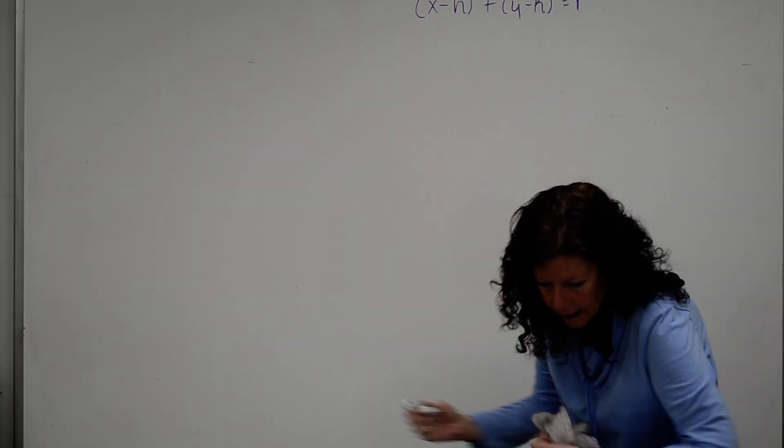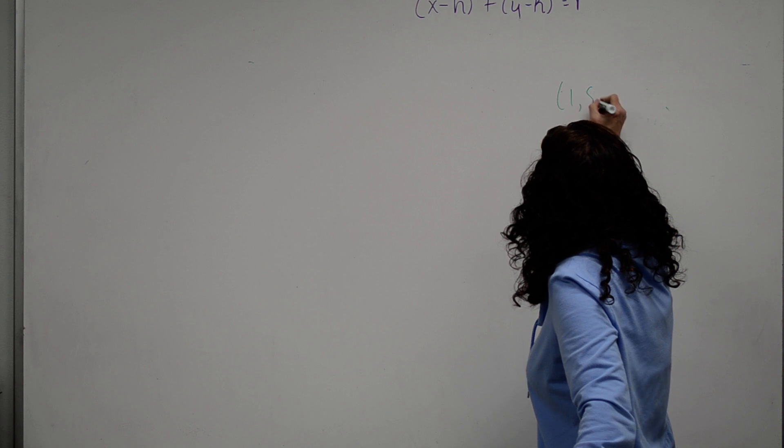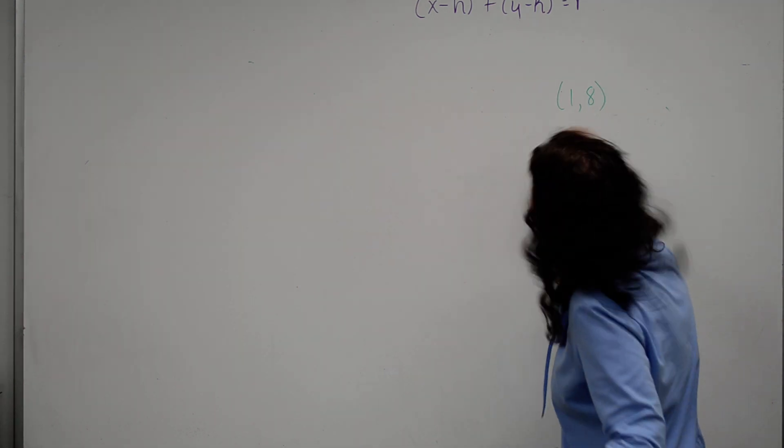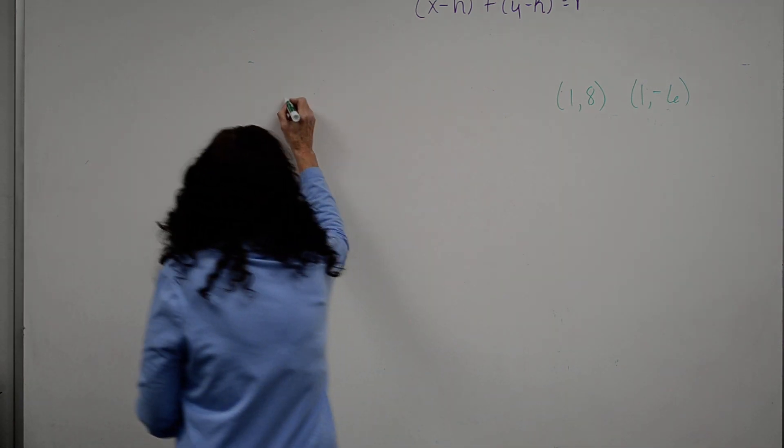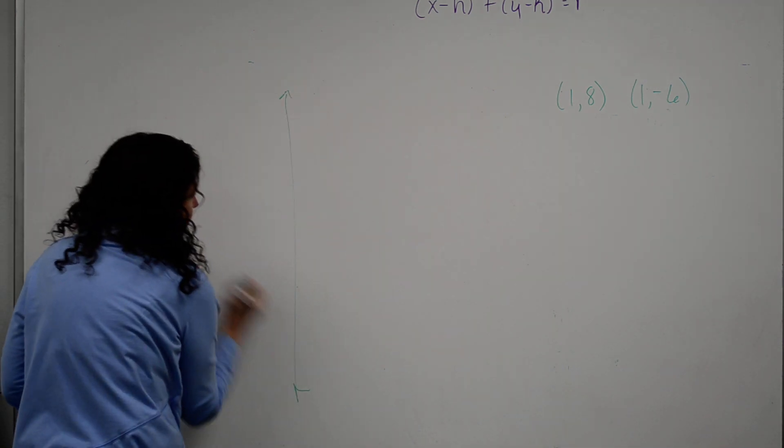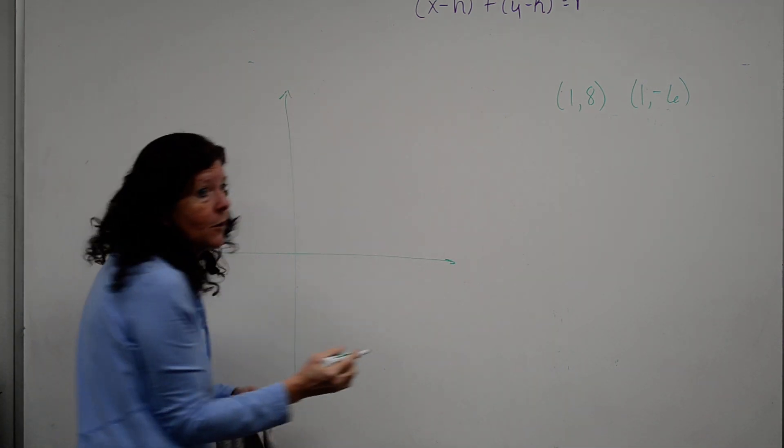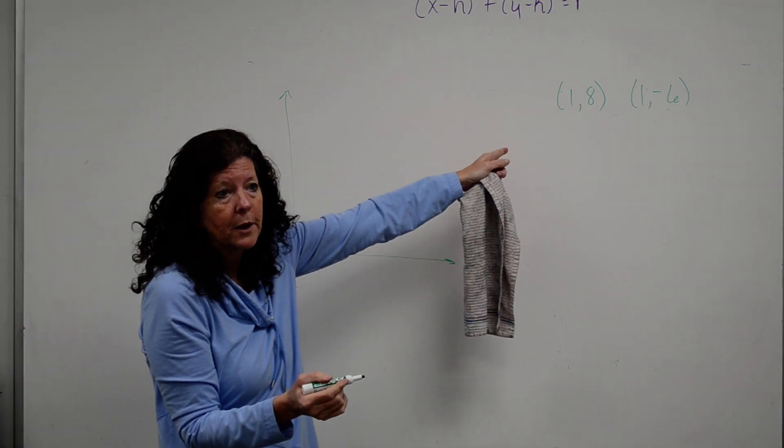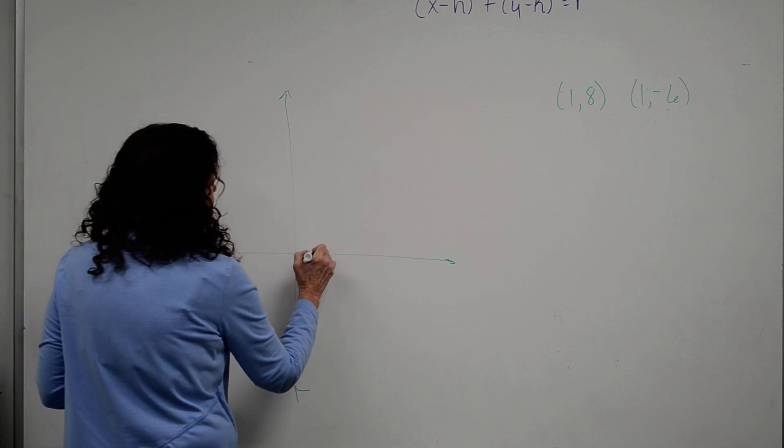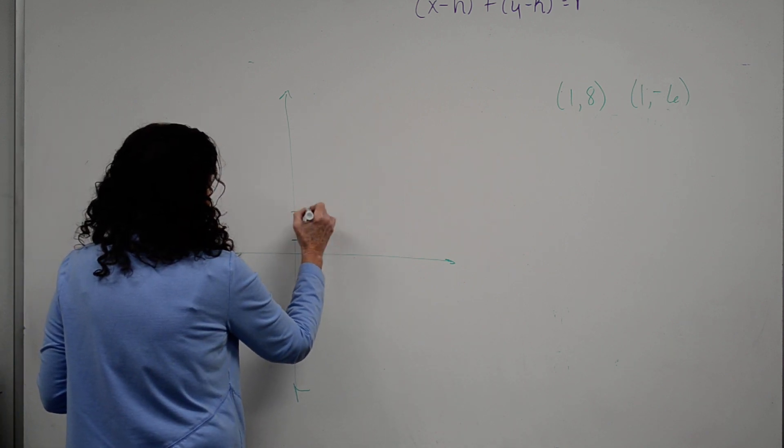All right. End points of the diameter. 1, 8 and 1, negative 6. Okay? Now, I would always graph, but the truth of the matter is you don't have to graph, because you know to find the center point. You're using the midpoint. Okay? But if you graph it, it's going to help you visualize it.